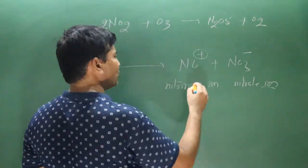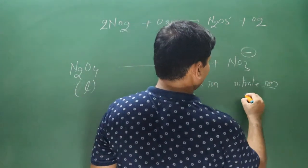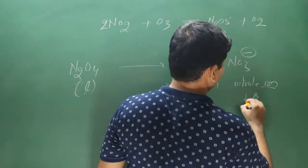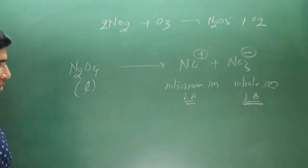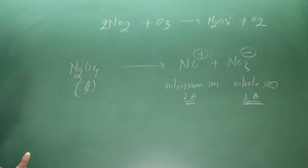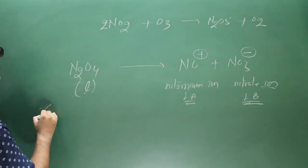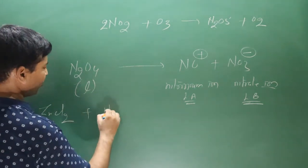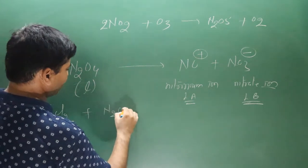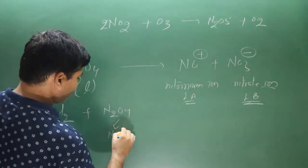The nitronium ion (NO2+) carries positive charge and acts as a Lewis acid, while the nitrate ion (NO3−) carries negative charge and acts as a Lewis base. This is an ionic equilibrium.